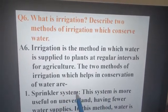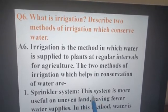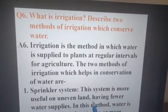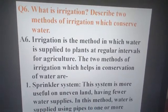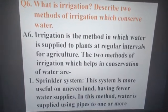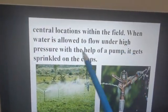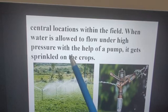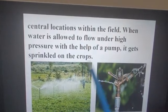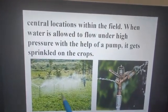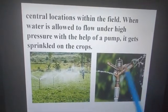The sprinkler system is more useful on uneven land having fewer water supplies. In this method, water is supplied using pipes to one or more central locations within the field, and water is allowed to flow under high pressure with the help of a pump. It gets sprinkled on the crops like rain. You can see in the image — this is a nozzle with water coming out and going to the soil.